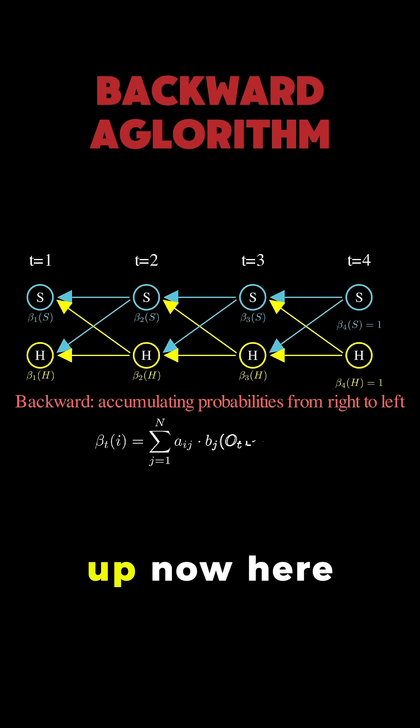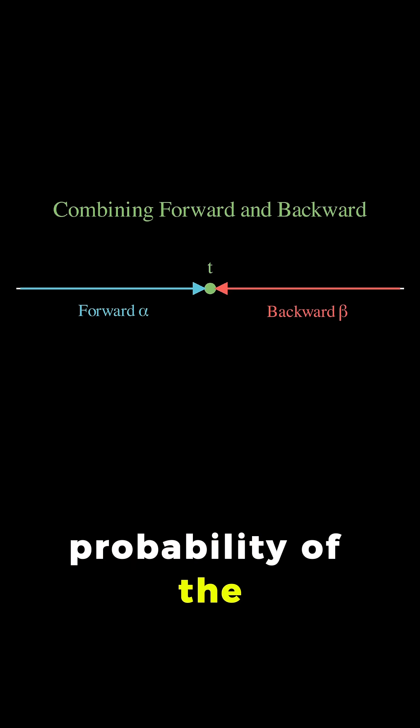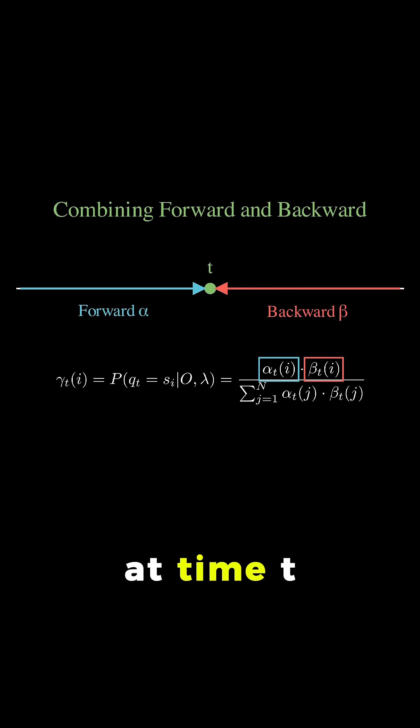Now, here is where the magic happens. When we multiply alpha t of i and beta t of i together, we get the probability of the entire observation sequence and being in state i at time t.